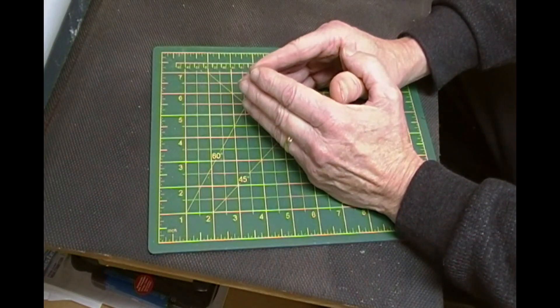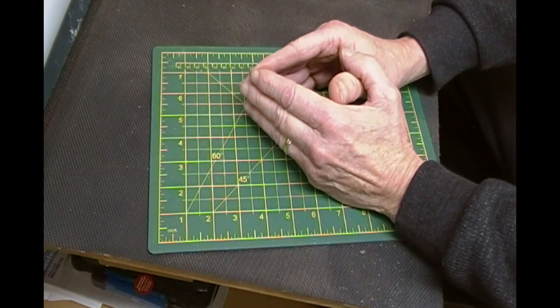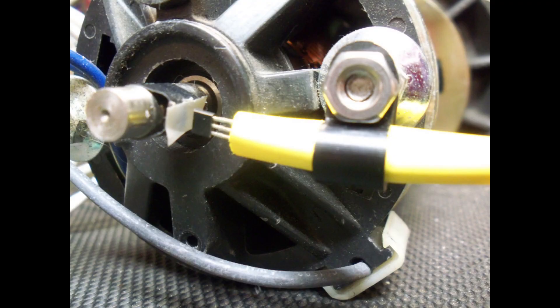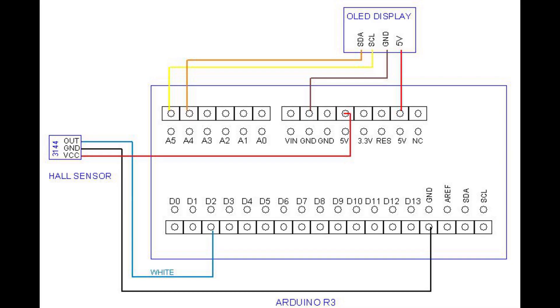I mounted the Hall sensor to the motor frame with a plastic cable strap. Then I connected the Hall sensor to the Arduino with a red wire to the Arduino 5 volt connector, a black wire to the Arduino ground connector, and a white wire to the Arduino's digital pin 2 connector.